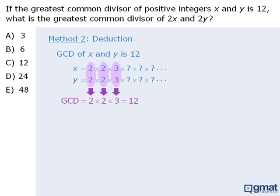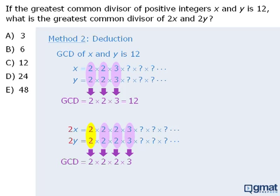So we can already conclude that the prime factorizations of x and y share some prime factors. So if we multiply x and y by 2, then the prime factorizations of 2x and 2y will both include an additional 2. This means we have an additional pair of prime factors in common, which means the greatest common divisor of 2x and 2y will equal this new product, which equals 24.